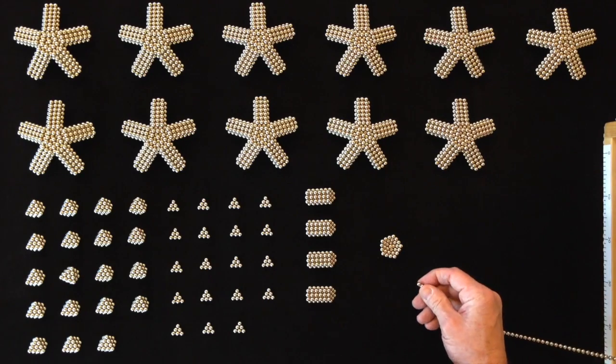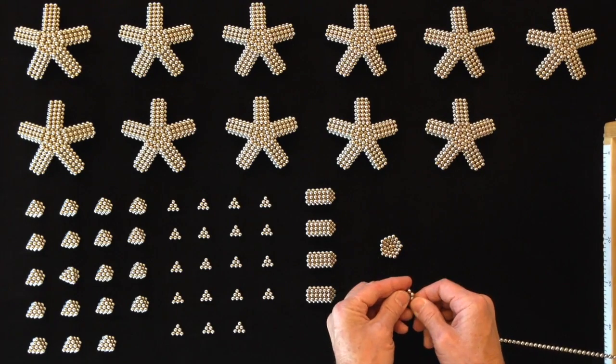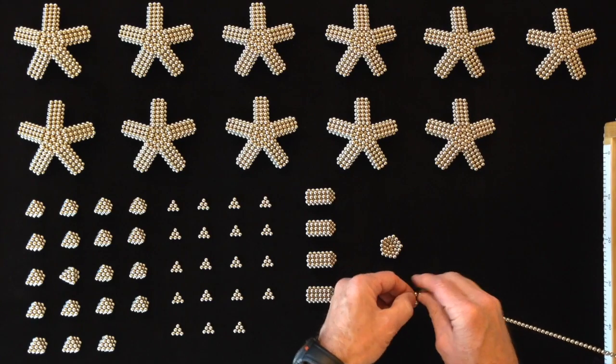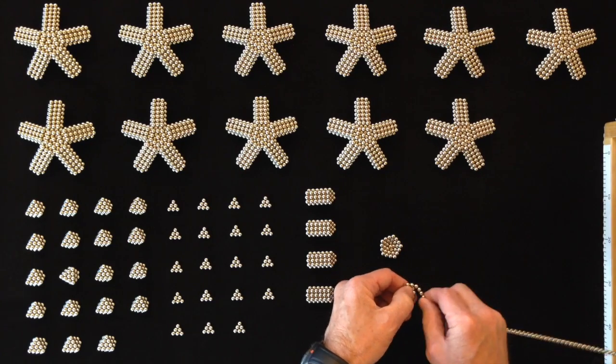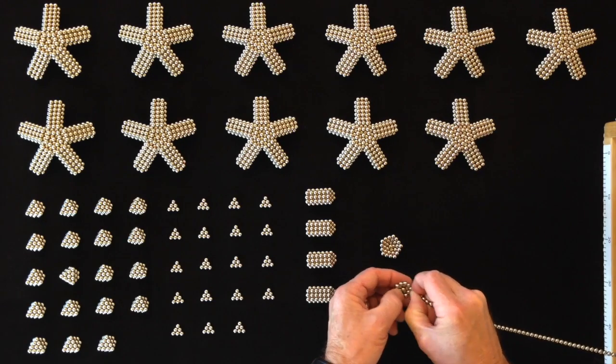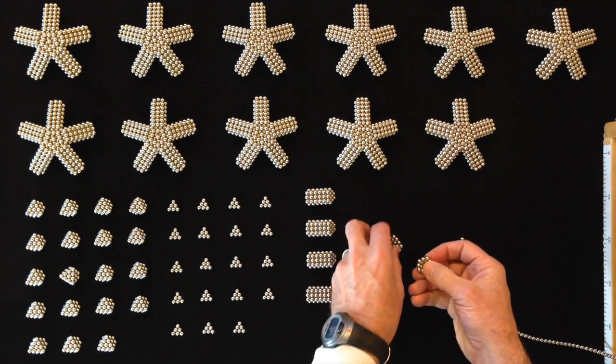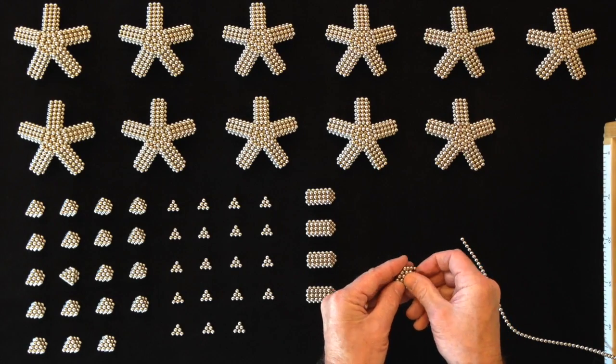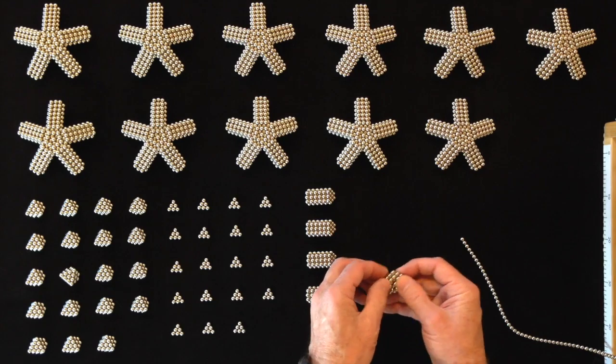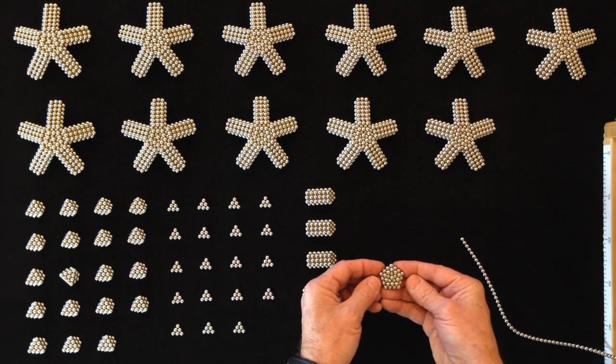Then build another pentagon ring out of five magnets and add just one layer to that and a magnet to the center, then sandwich the smaller one inside the larger one and square up the corners like that.